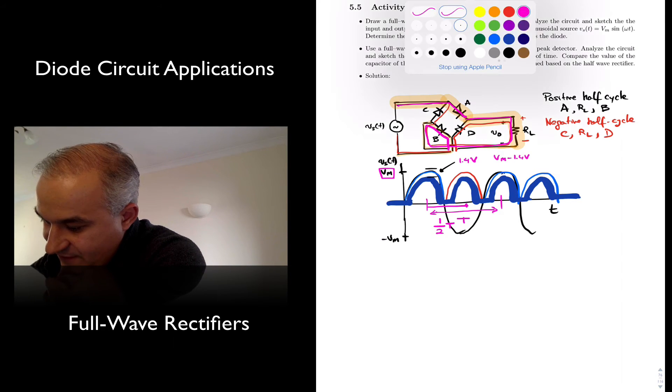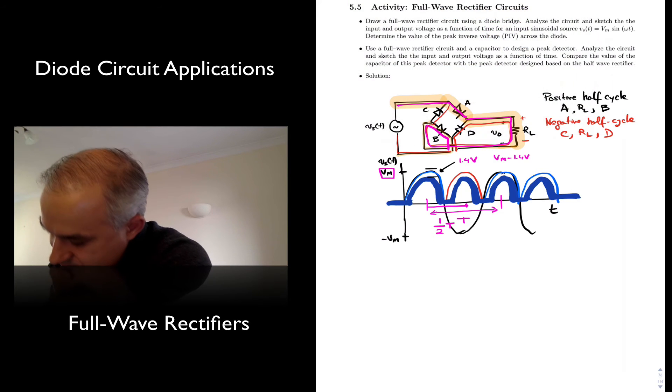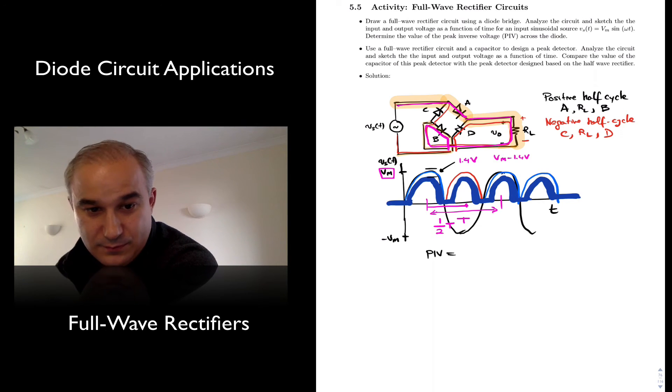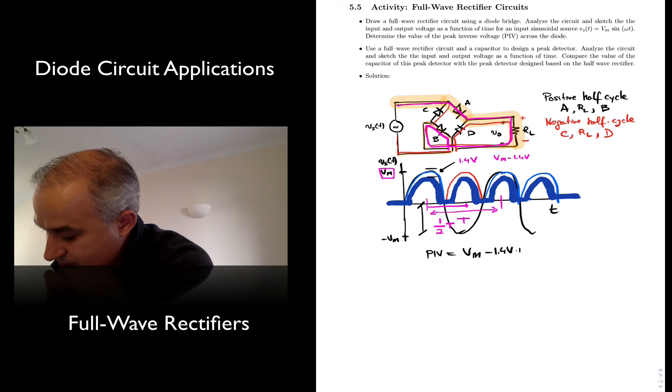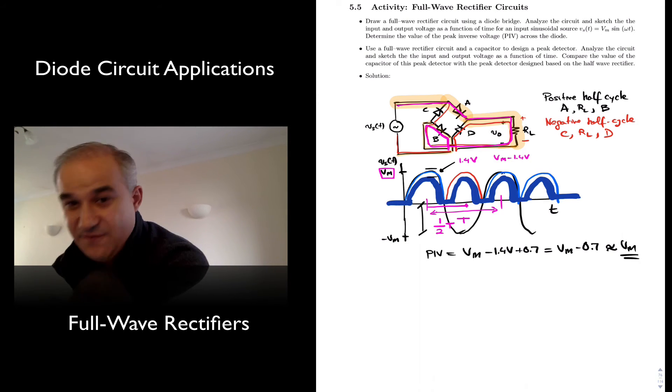And the peak inverse voltage, in this case, what we have is going to be Vm maximum. This is minus 1.4 volts. We have two voltage drops plus 0.7. So what we have is V maximum minus 0.7, approximately Vm for applications.